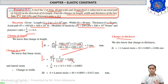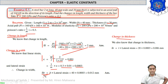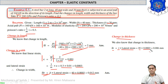Lateral strain equals (1/m) × epsilon equals 0.3 × 0.001 equals 0.0003. Now, lateral strain equals delta-b by b, so delta-b equals b × lateral strain equals 40 × 0.0003 equals 0.012 mm. Similarly, delta-t equals thickness × lateral strain equals 20 × 0.0003 equals 0.006 mm.